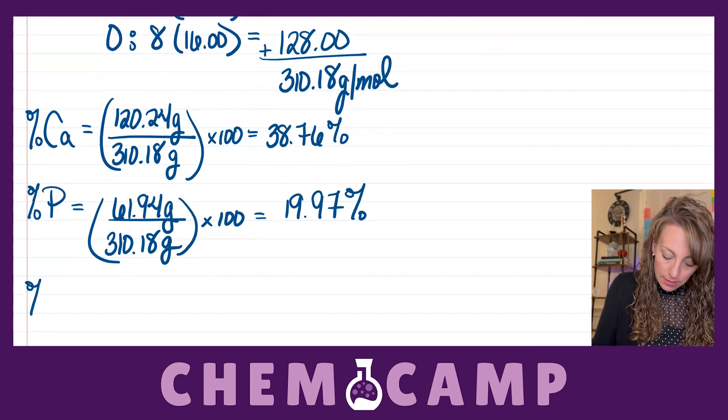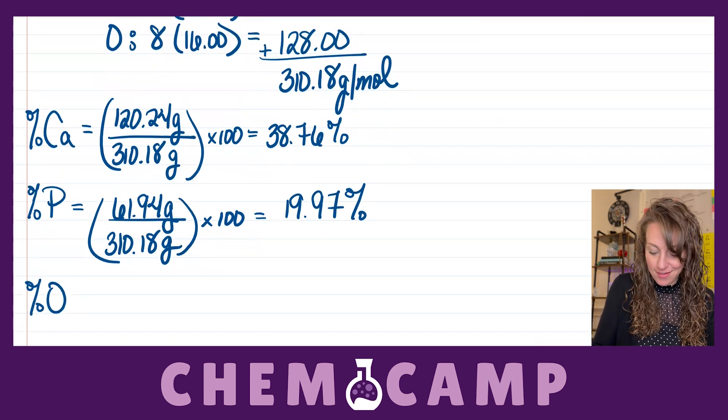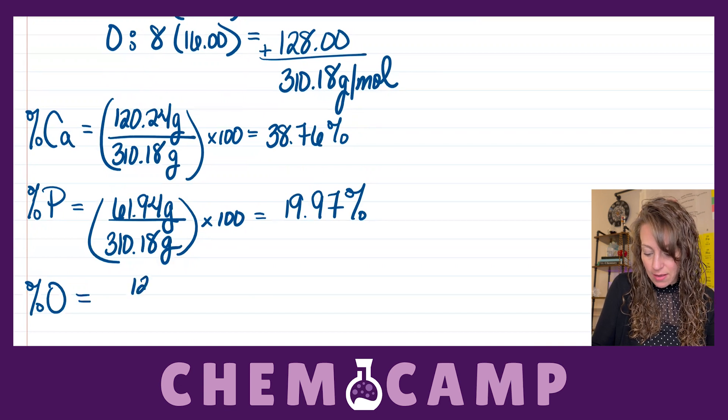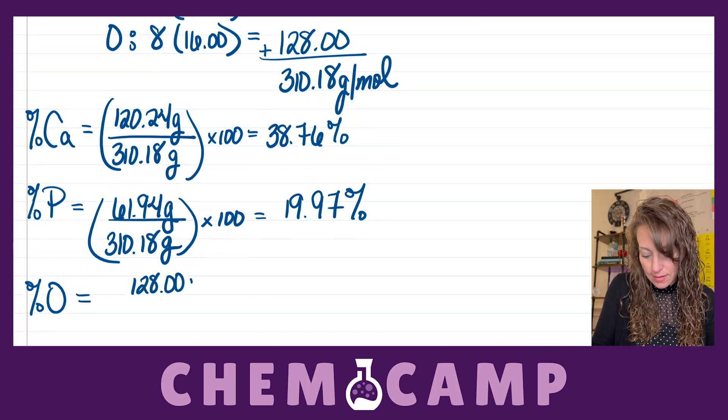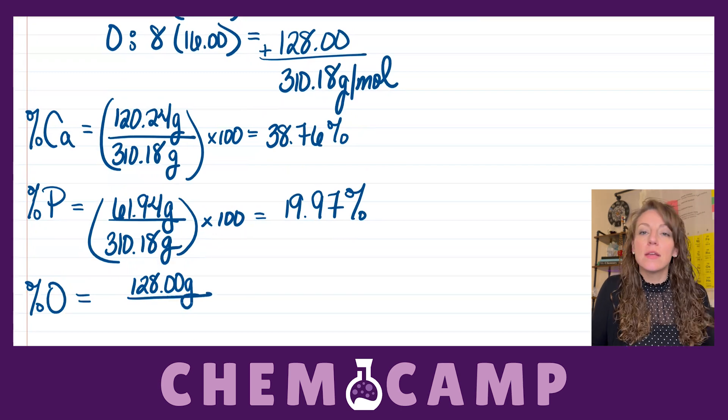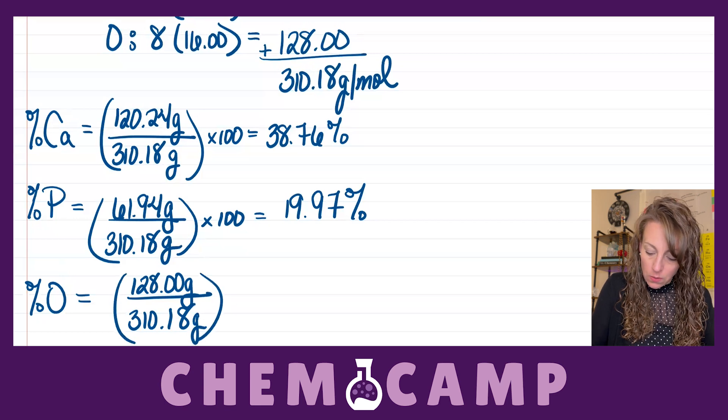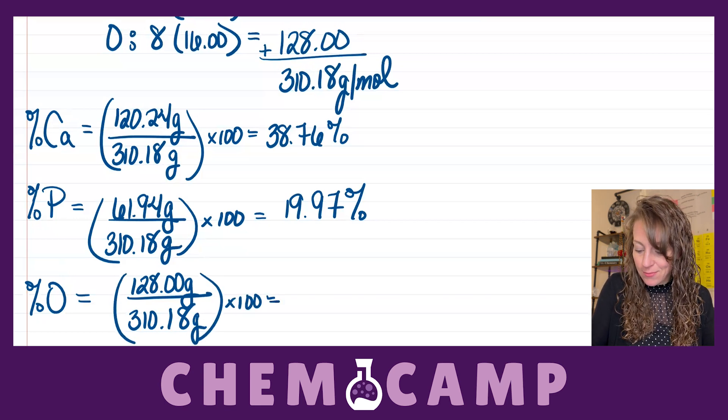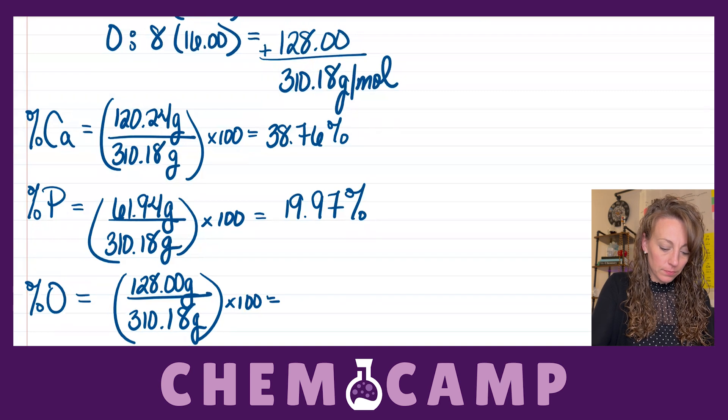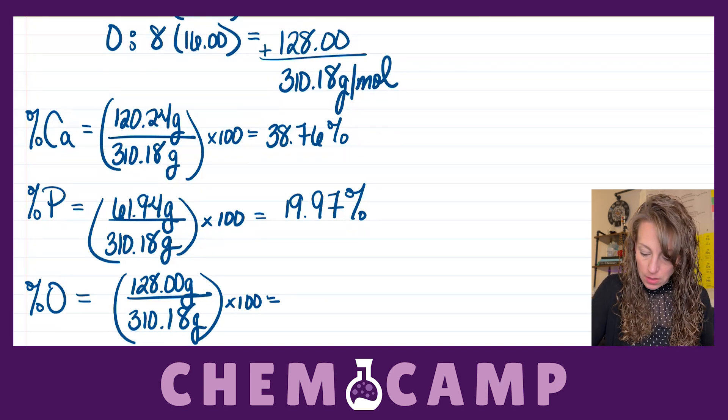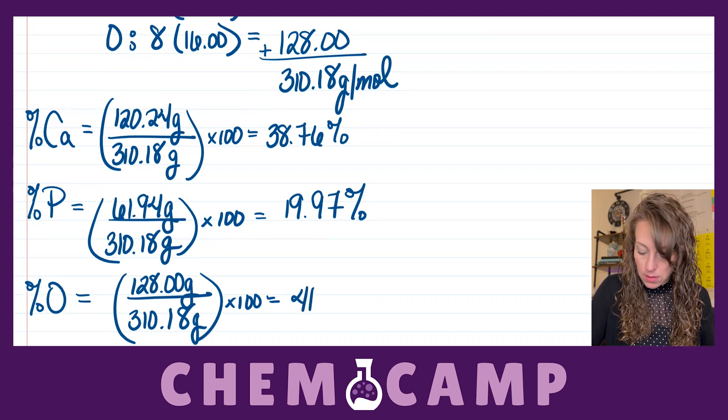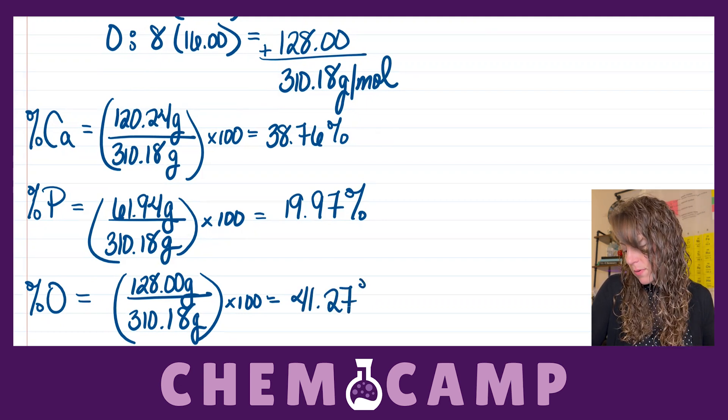Last up, I'm going to calculate the percent oxygen. So, I have 128 grams, divided by the 310.18 grams, which gives me 41.27 percent.